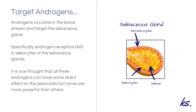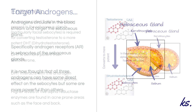All three androgens circulate in the blood and are attracted to the androgen receptors, which are specifically located in the sebum sites of the sebaceous glands. All three — DHT, testosterone, and DHEA — interact with the androgen receptors, but some are more potent than others.